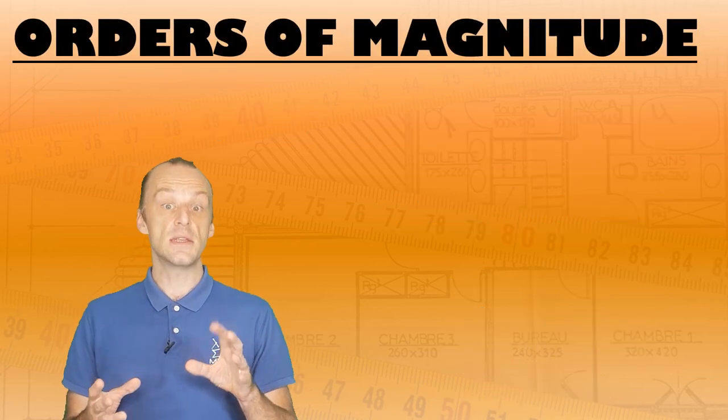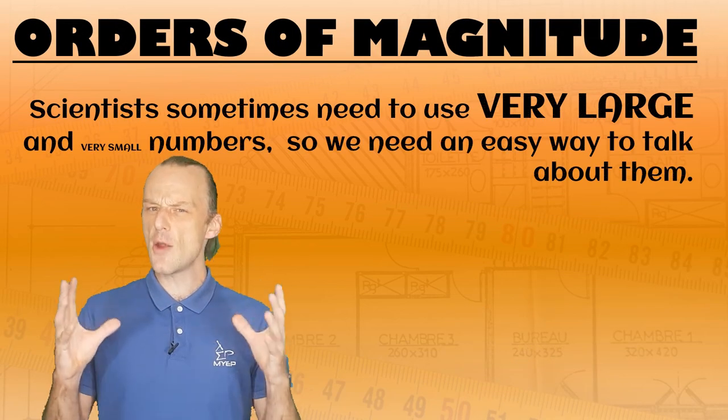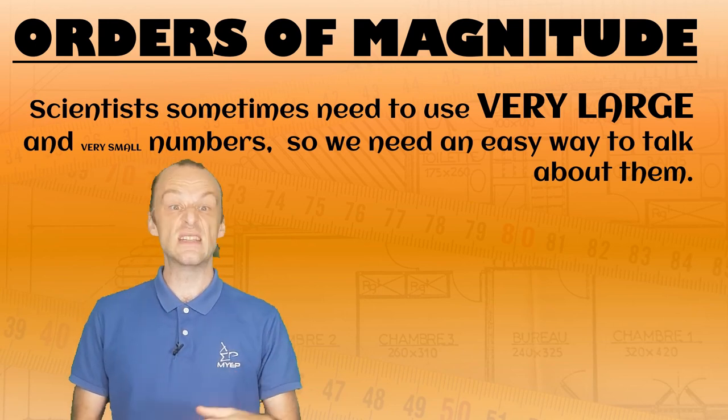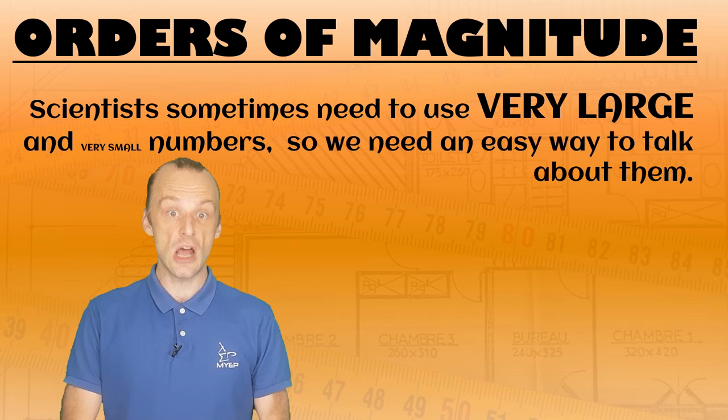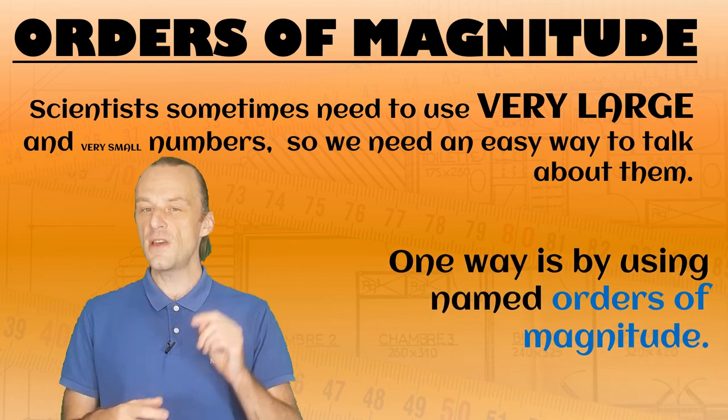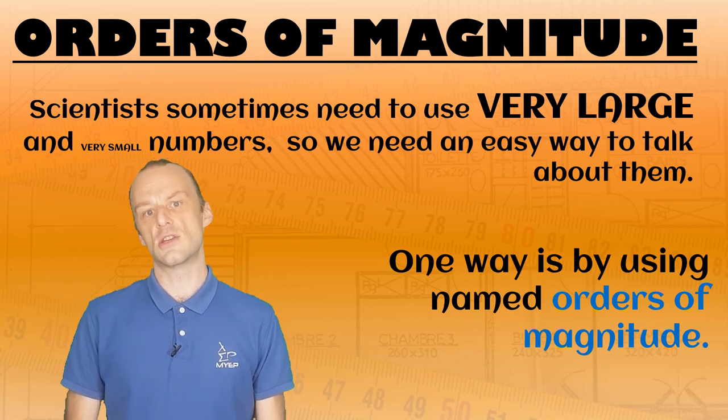In modern science, we often have to use very big or very small numbers. We are often dealing with billions, trillions, or even larger quantities. There are a few ways to do this, but the first way is to use named orders of magnitude.